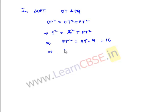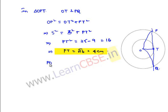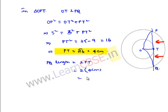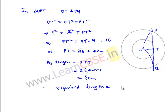Since PQ = 2 × PT = 2 × 4 = 8 cm, the required length of the chord is 8 cm.